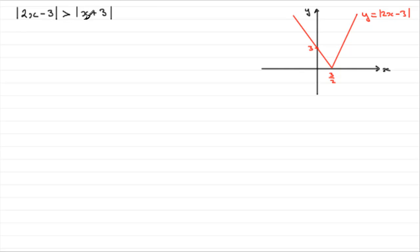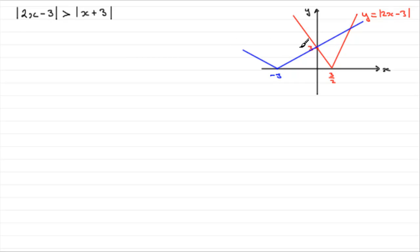Now we need to draw the graph of y equals the mod of x plus 3. Without the mod, y equals x plus 3 is a straight line through y equals 3, with a gradient of 1 — less steep than the 2. It comes down and then, at x equals minus 3 where the expression equals 0, it gets reflected back out. It's not as steep as the other graph.